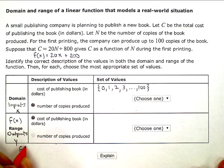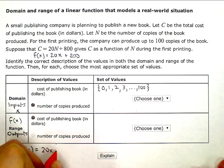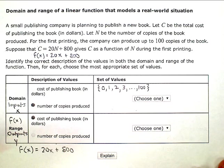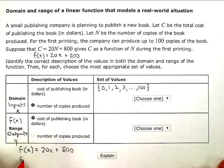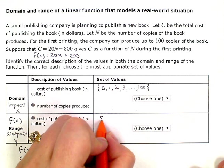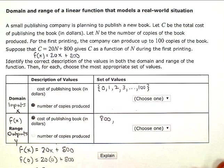F of x equals 20x plus 800. If I print zero books, what is my cost going to be? Or what's the function value at zero? So I substitute in zero, 20 times zero is zero, and zero plus 800 is 800.